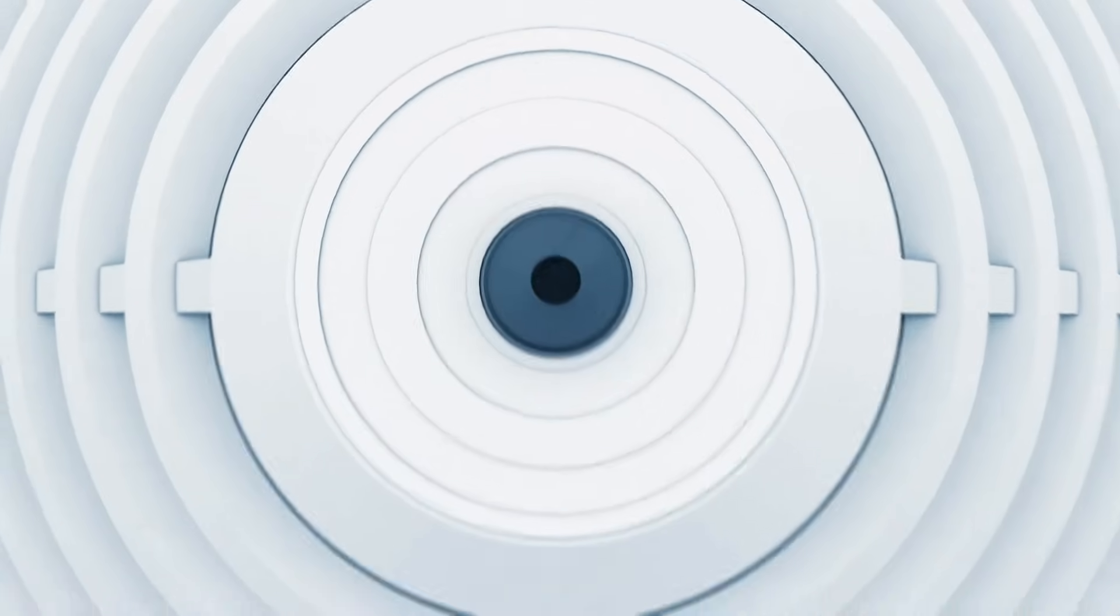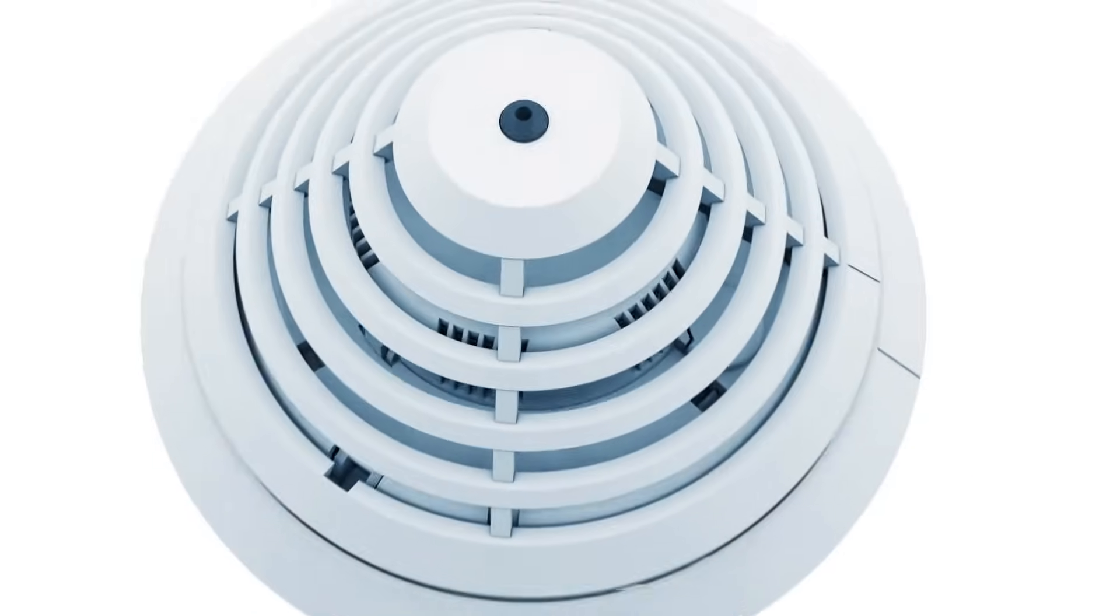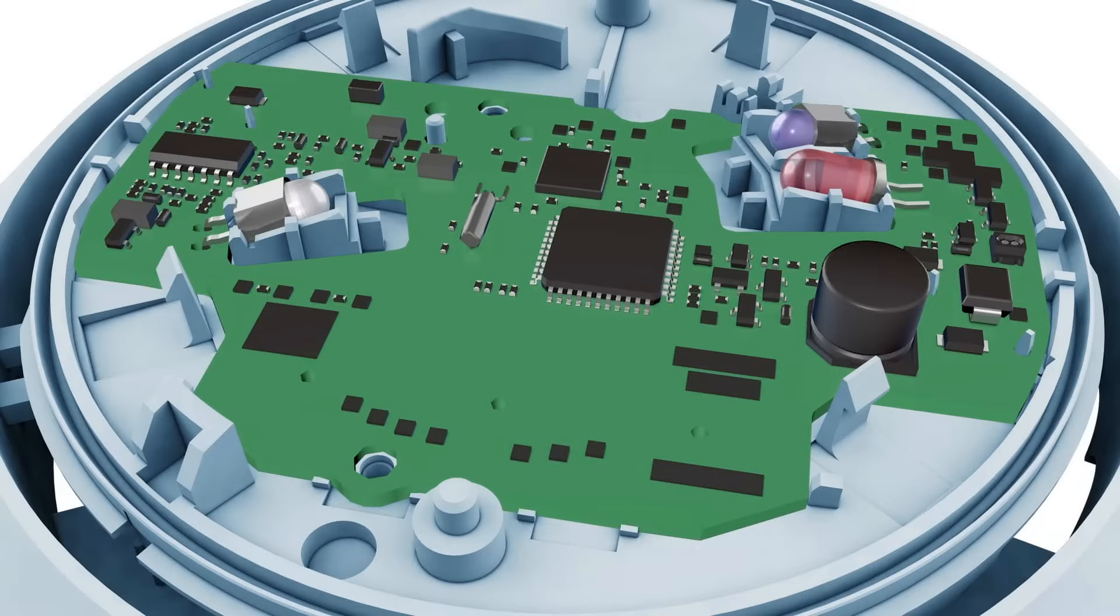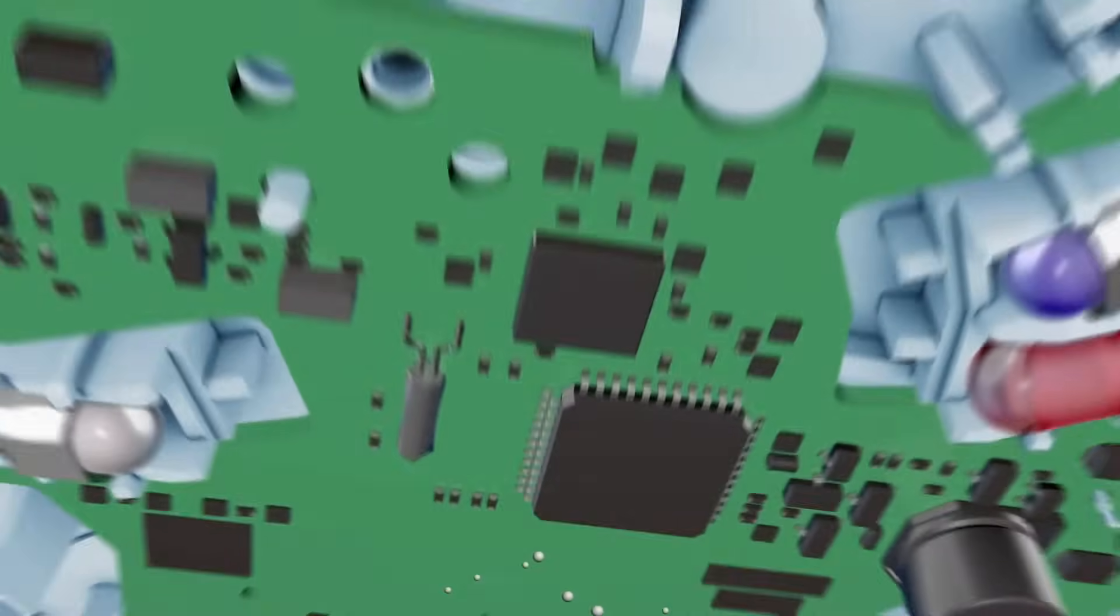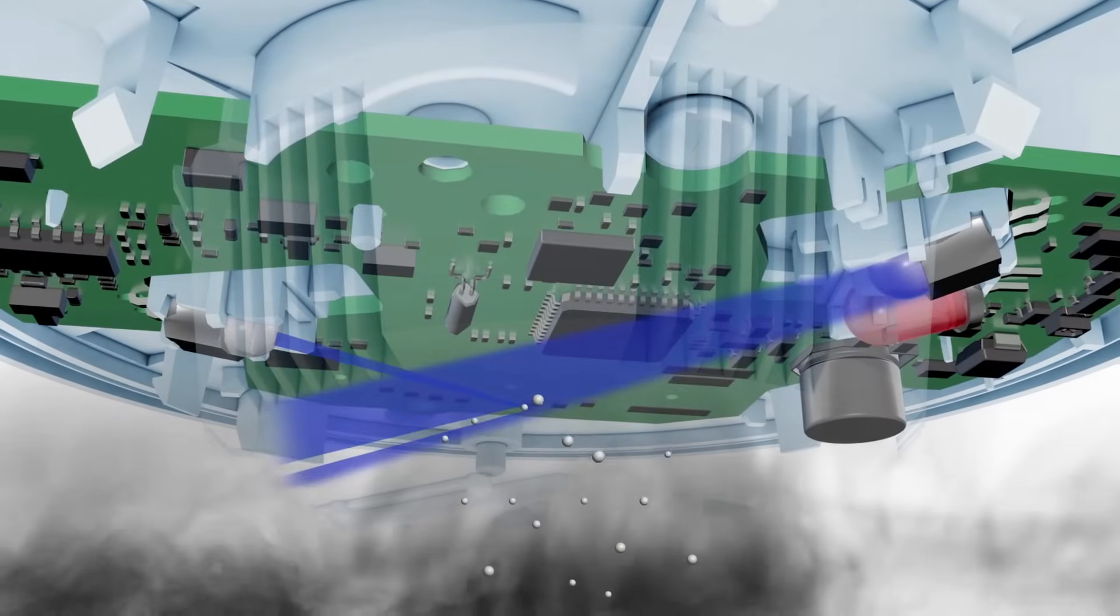Detector types with dual-ray technology are particularly effective at identifying the tiniest traces of smoke early. They have two optical sensors, one with an infrared and one with a blue LED. Thanks to their different wavelengths, the detectors are able to measure the exact density and size of the smoke particles.